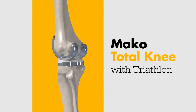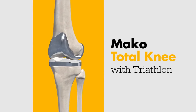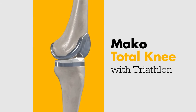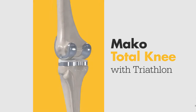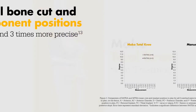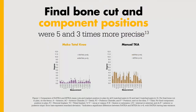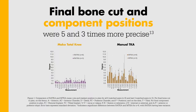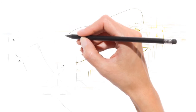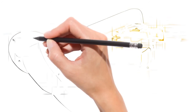Once bone preparation is complete, you'll place the components using Triathlon instrumentation. In a cadaveric study, on average, Mako Total Knee final bone cuts and final component positions were five and three times more precise to plan compared to the manual TKA control, respectively.